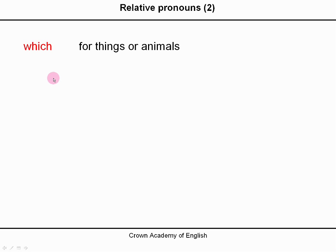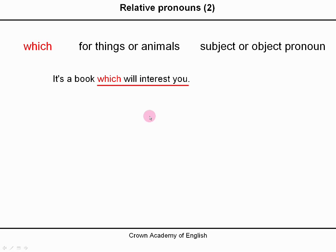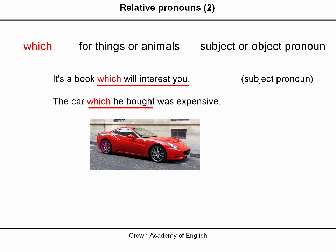'Which' — this is for things or animals, and it can be used as the subject or object pronoun. Example: 'It's a book which will interest you.' 'Which will interest you' is the relative clause, and 'which' is the relative pronoun. It is the subject in this example because 'which' is representing 'book', and the book will interest you. Here is an example with 'which' as the object pronoun: 'The car which he bought was expensive.' He bought a car and the car was expensive, so it is the object.